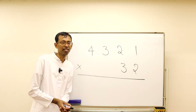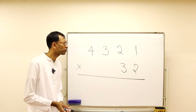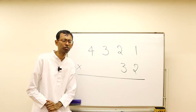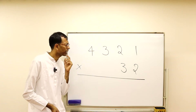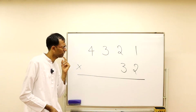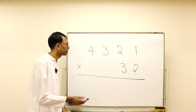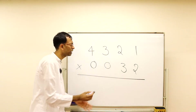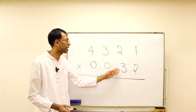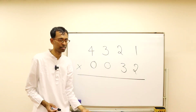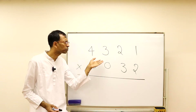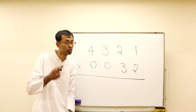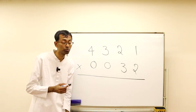Now a funny thing — suppose you have a four-digit times two-digit multiplication. How do you do this? You can put zeros here and treat this number as a four-digit number. Then do this multiplication from right to left using pen and paper. Pause the video.